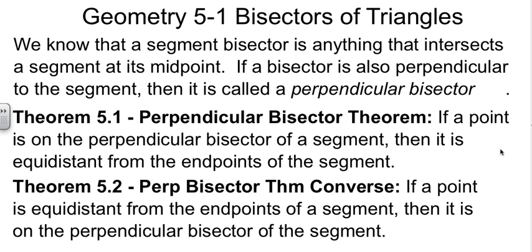And we have two theorems about the perpendicular bisector that are quite useful to us. And they're converses of each other. Our first theorem, the perpendicular bisector theorem, tells us if a point is on the perpendicular bisector, then that point is equidistant from the endpoints of the segment that it's bisecting.